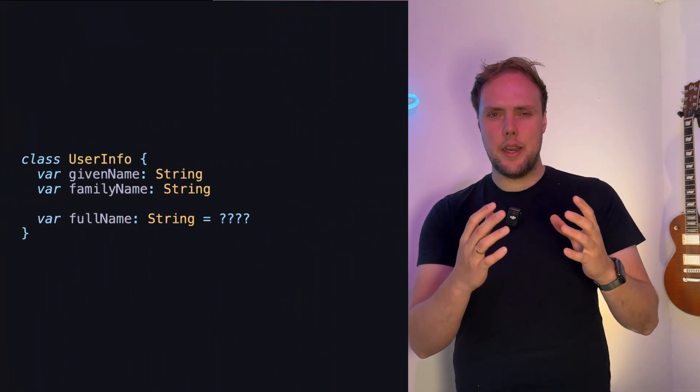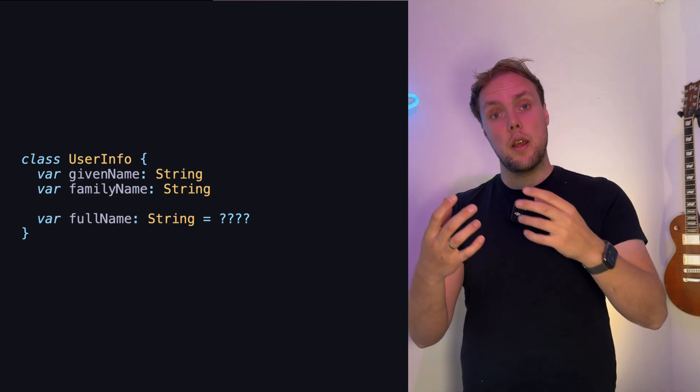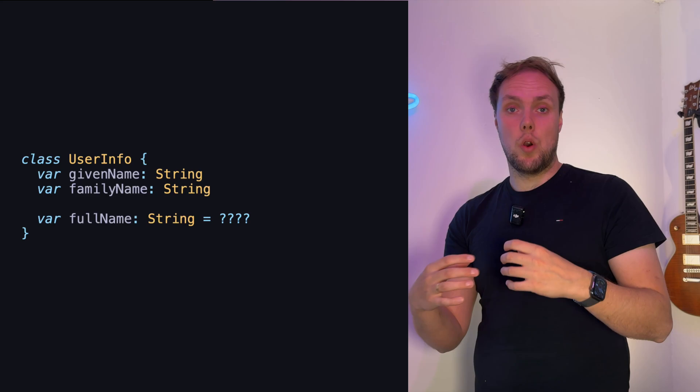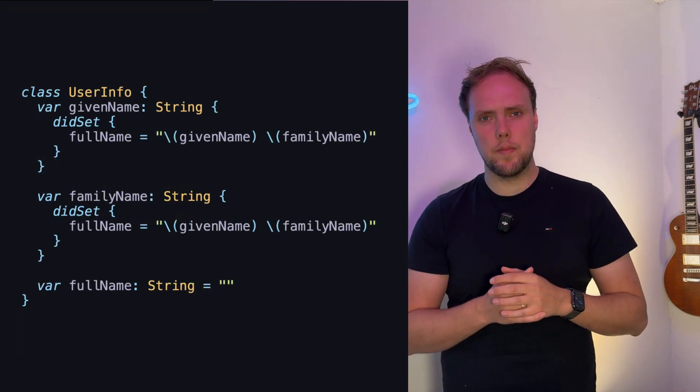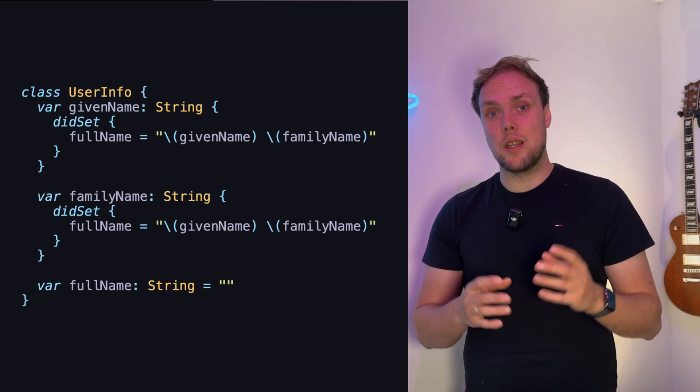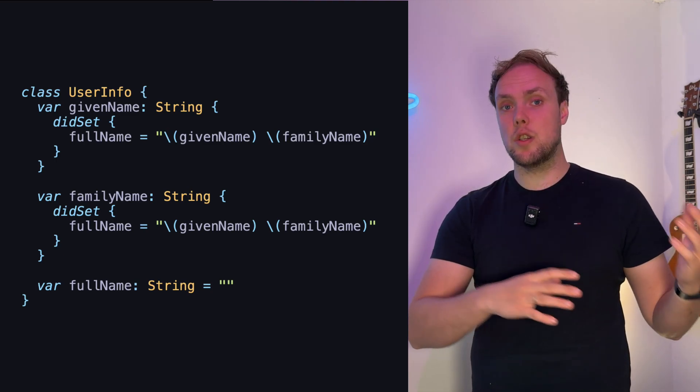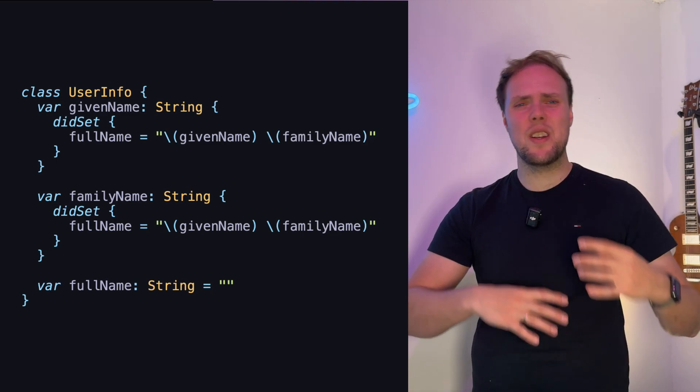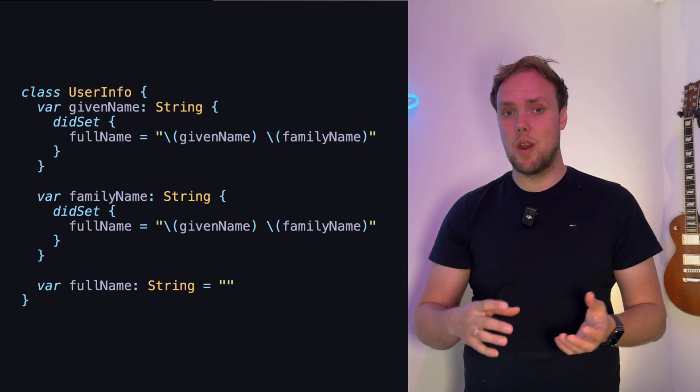One thing we could do is actually add a setter to both properties and then give a value to our full name property as shown in this code snippet here. This works, but I really don't like this. This is so error prone. We could just assign a new value to full name outside of changing the given name and family name, and there's nothing in here that guarantees that full name is derived from these two.